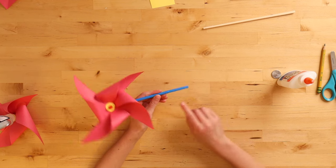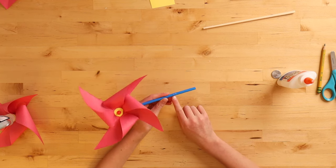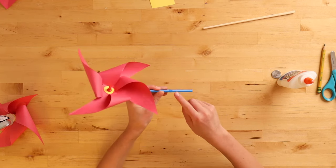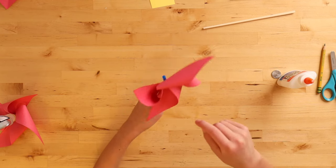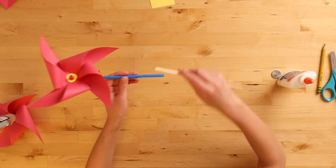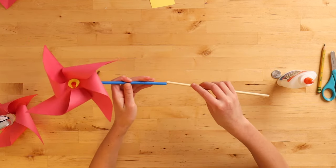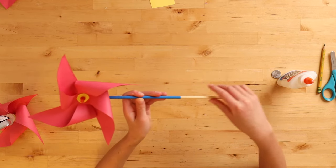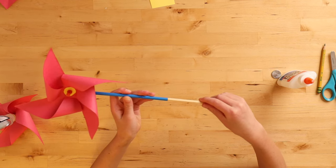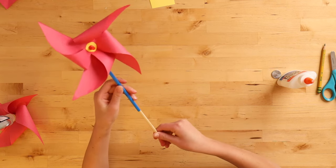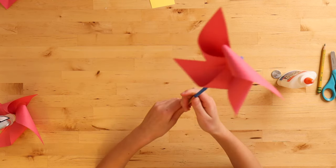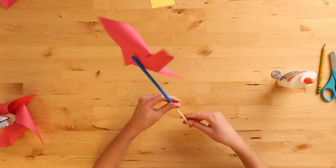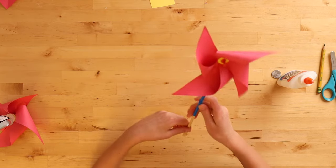Make sure that if you're using a bending straw, use the bendy part on the bottom just so that your top of the pinwheel doesn't bend around. And you can make your pinwheel stronger if you have a chopstick and you can put it into your pinwheel. Now it's a little bit longer and if you want you can stick it in your garden or something like that.